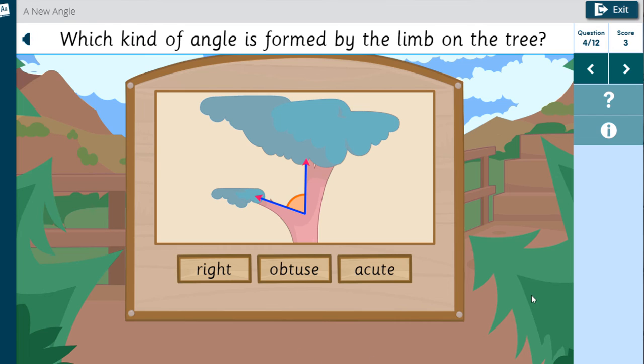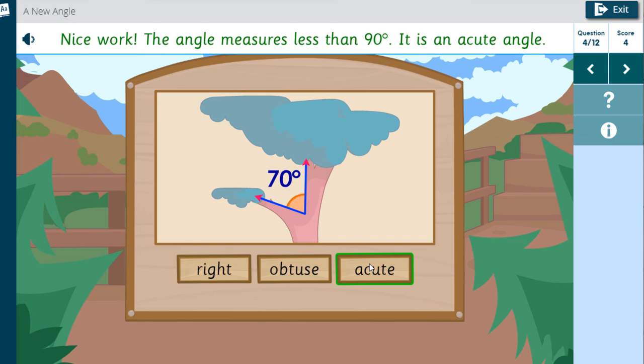Which kind of angle is formed by the limb on the tree? Nice work. The angle measures less than 90 degrees. It is an acute angle.